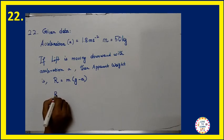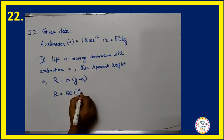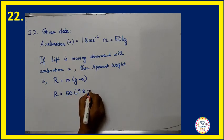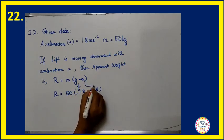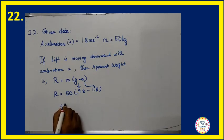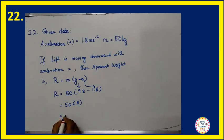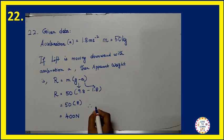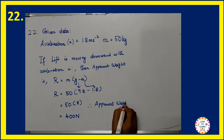Now we have to substitute the given values. R equals 50 into 9.8 minus 1.8. So we have substituted the value for g and a and m. 50 times 8 gives 400. Therefore we have calculated the apparent weight as 400 N.